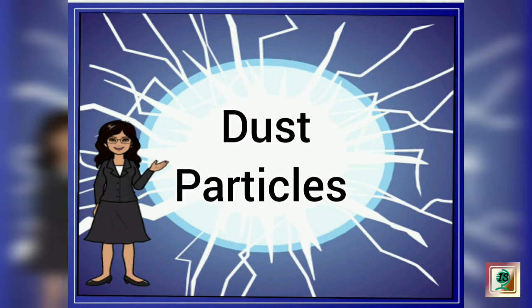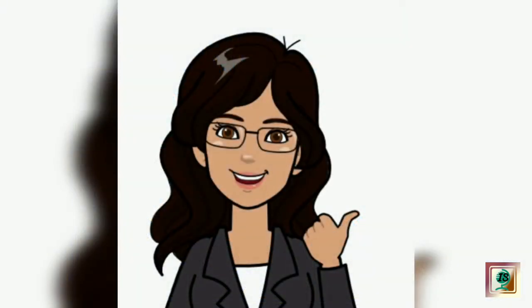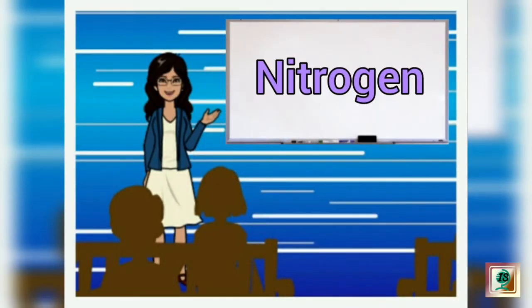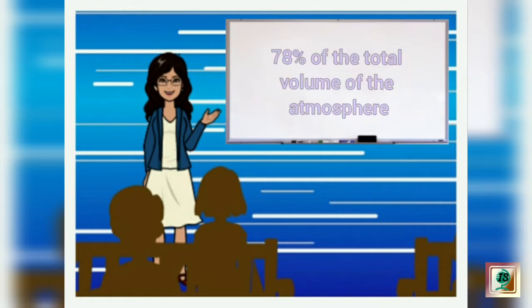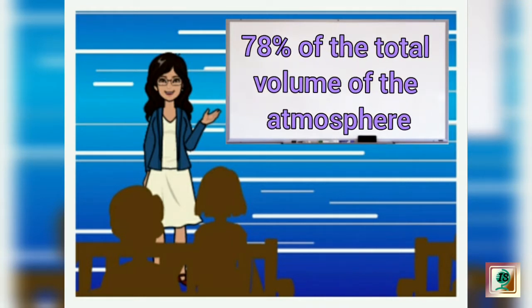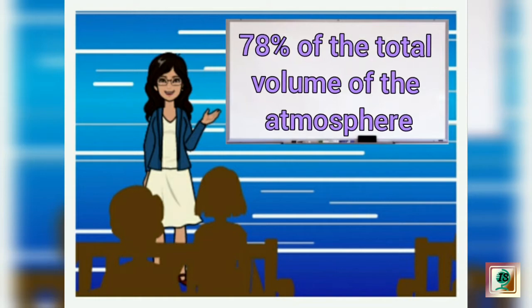The lower layer of the atmosphere contains water vapor and dust particles. That was all about the composition of the atmosphere. Let us now know about the three important gases in the atmosphere. The first one is nitrogen.